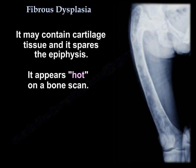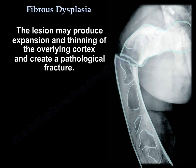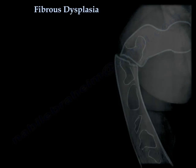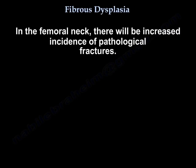It may contain cartilage tissue, and it spares the epiphysis. It is hot on bone scan. The lesion may produce expansion and thinning of the overlying cortex and create a pathological fracture. In the femoral neck, there will be an increased incidence of pathological fractures.